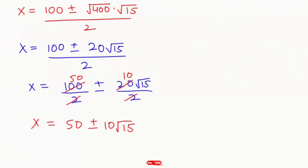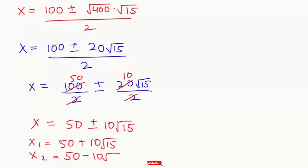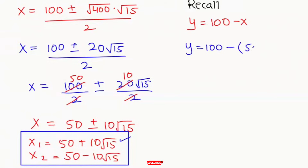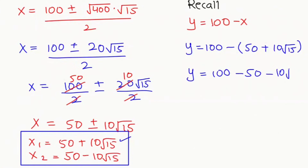So here we get two x values: x₁ equals 50 plus 10 root 15, and x₂ equals 50 minus 10 root 15. Now in the next step I'm going to recall equation 3: y equals 100 minus x. Plugging in x₁, that is 50 plus 10 root 15, we get y equals 100 minus 50 minus 10 root 15, so y equals 50 minus 10 root 15.